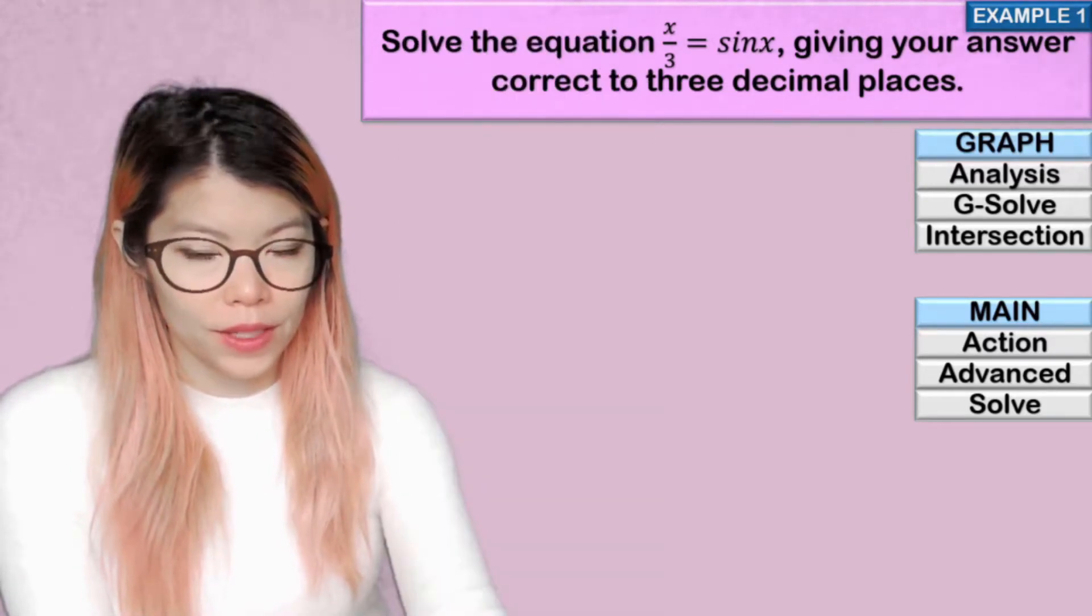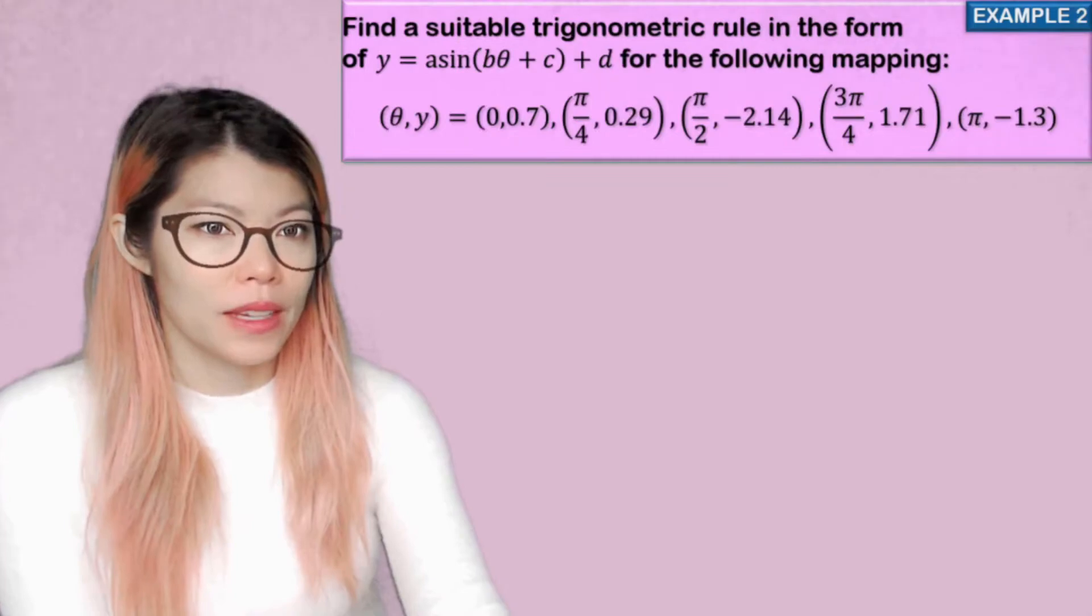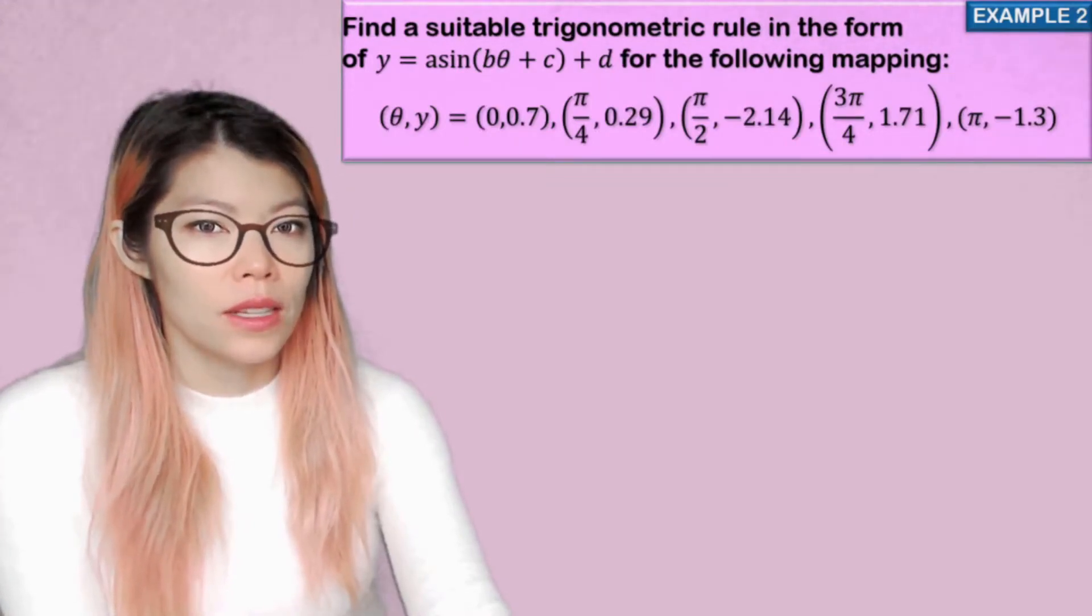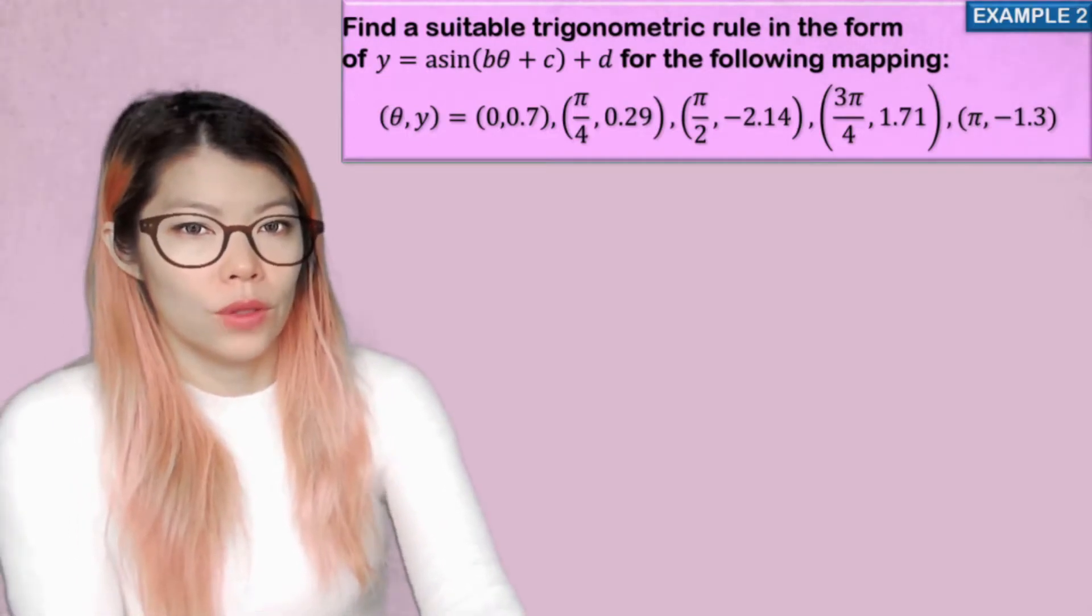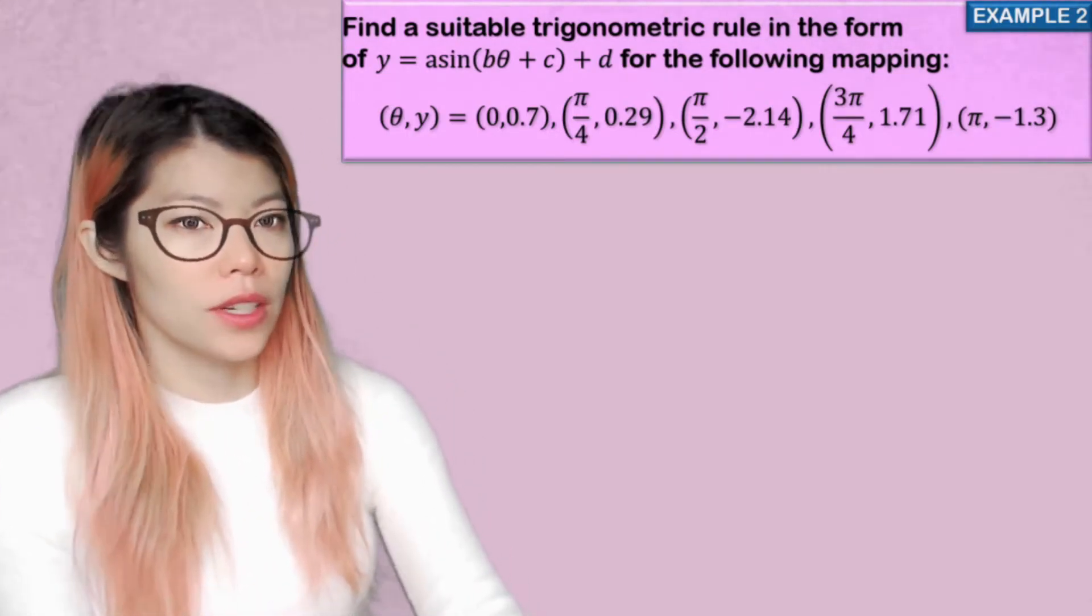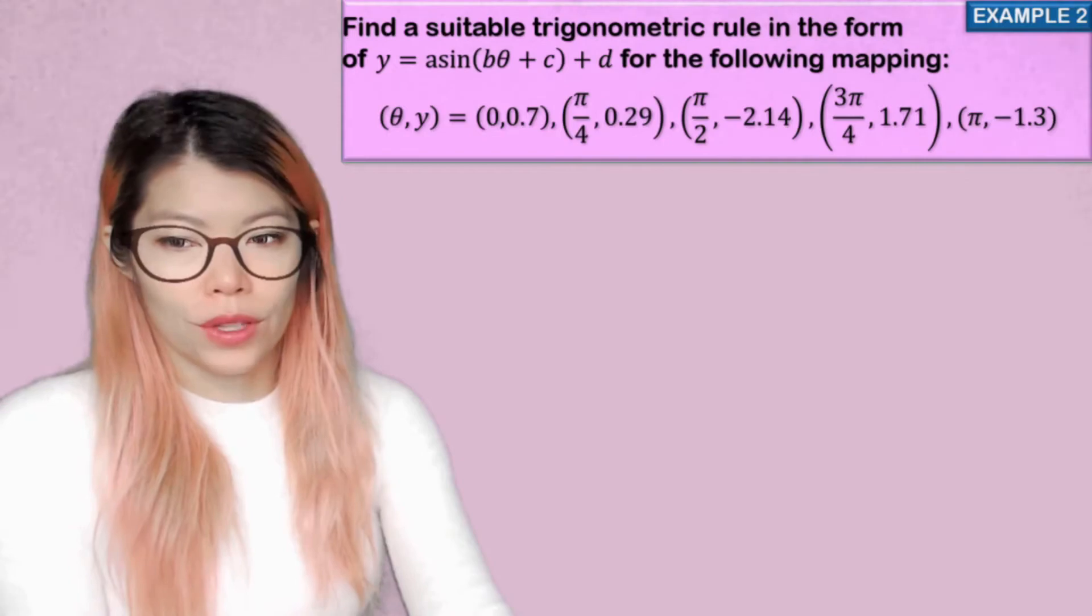Let me put the CAS away for a second. Okay, example number two. Find a suitable trigonometric rule in the form of a sine equation with the following values. So how do we do that?